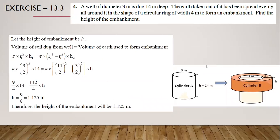Let height of the embankment be h2. Volume of soil dug from the well equals volume of the hollow cylinder embankment. Volume of the hollow cylinder = π·h2·(R_outer² − R_inner²), derived as the outer cylinder minus the inner cylinder. Substituting: π·r²·14 = π·h2·((7/2)² − (3/2)²). Pi cancels, and solving we get h2 = 9/8 = 1.125 meters. When solving, try to give answers to at least 2 decimal points.